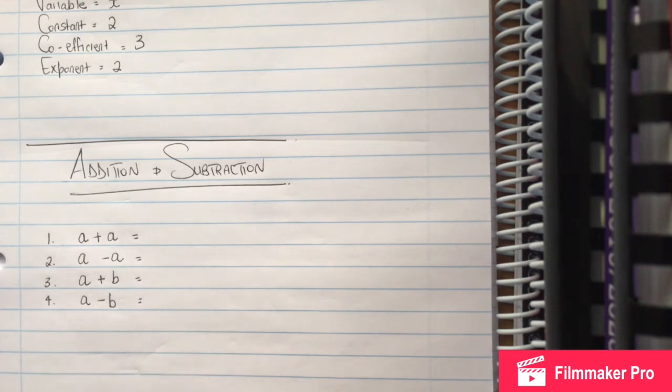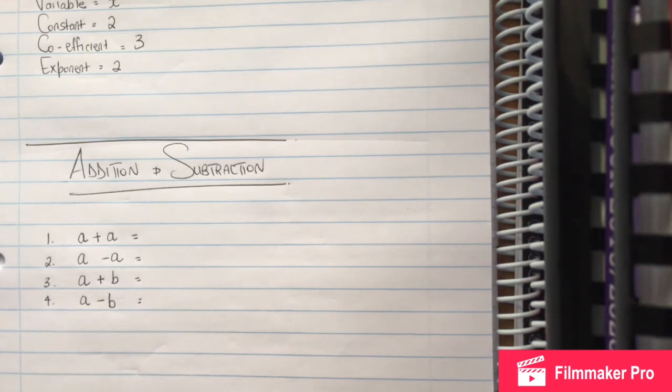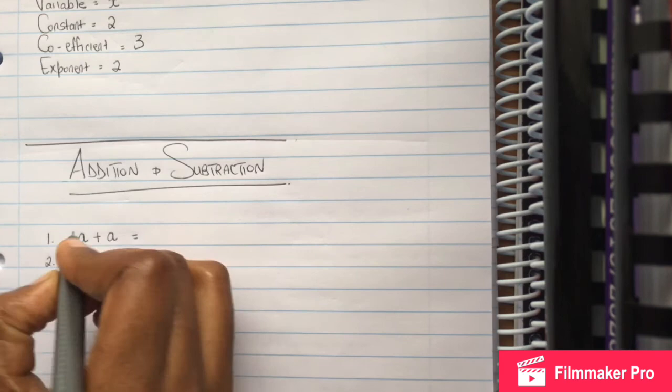The rule is that in front of a variable, if nothing is written, that means there is one.